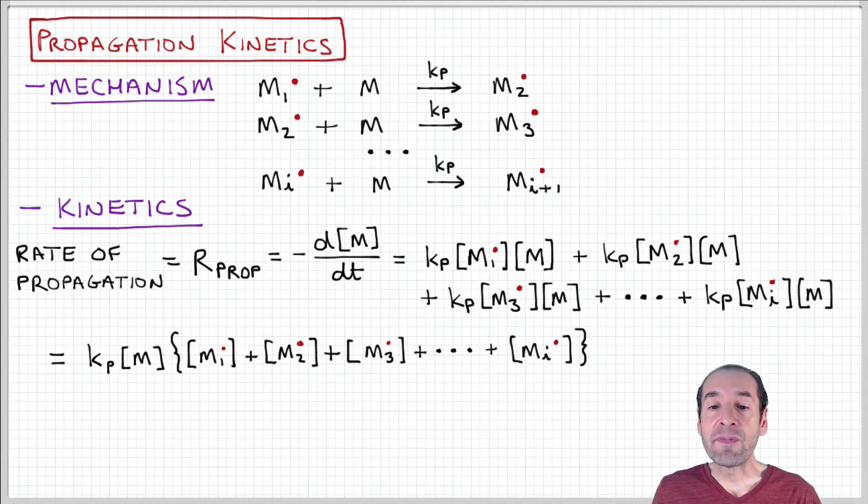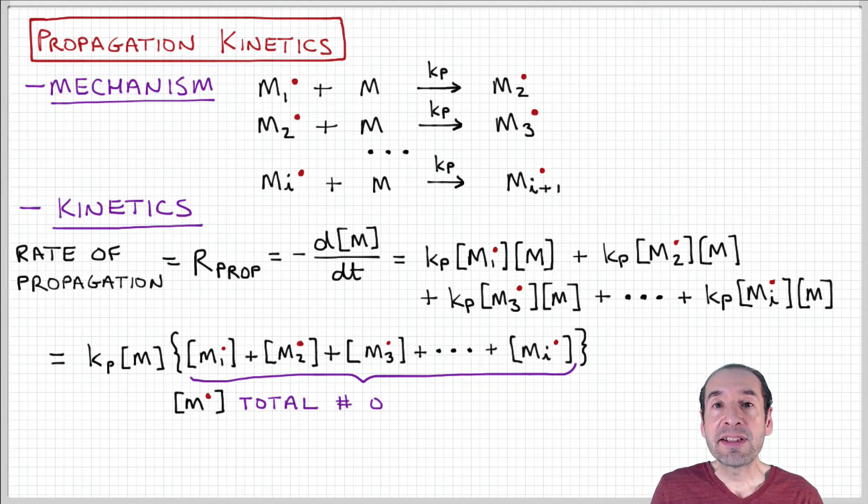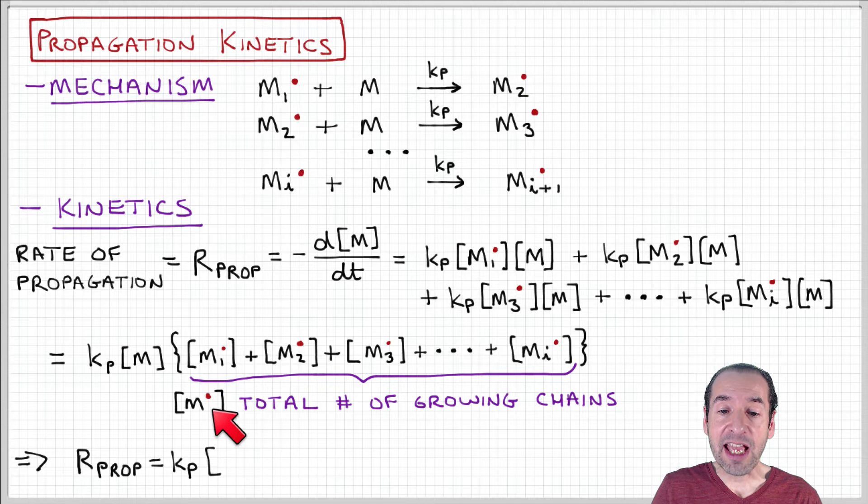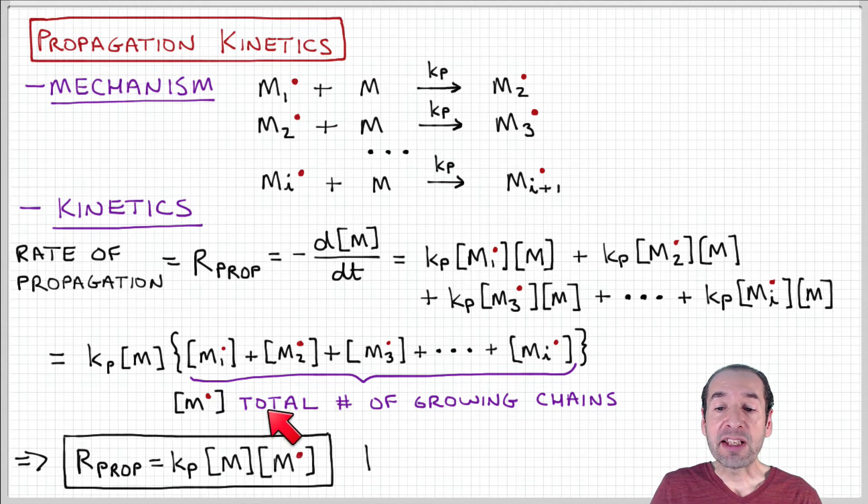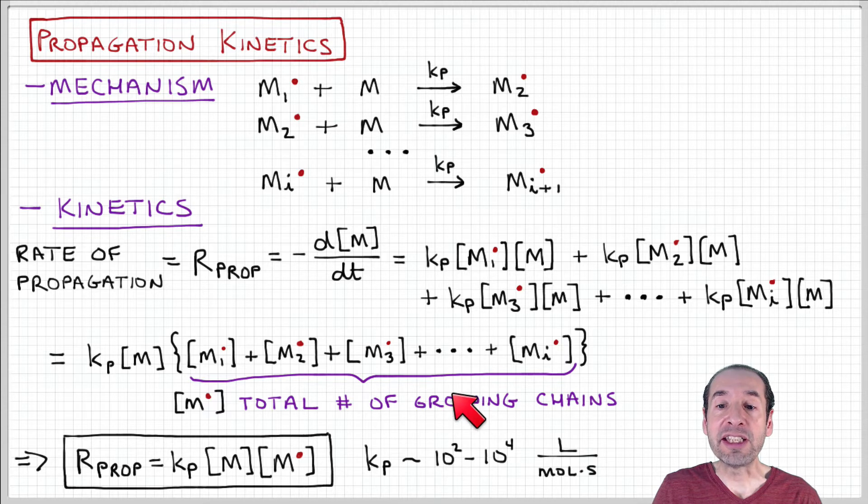We have the propagation rate constant times monomer concentration times the sum of concentrations of all these active chains in our sample. We can express that sum as just one quantity, M dot, representing the total concentration of active chains that are present.